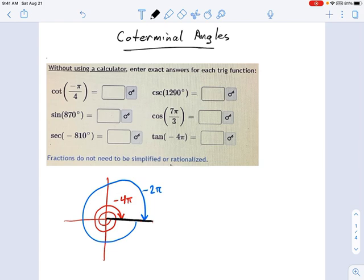So when you're looking for coterminal angles, here's what we want. We want theta greater than or equal to 0, but less than 360 degrees. Or if you're in radians, that's greater than or equal to 0, but less than 2π.